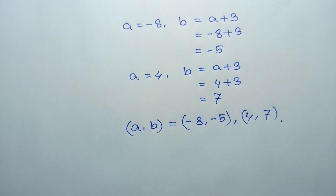So, these are the solutions: when A is equal to negative 8, then B is negative 5, and when A is 4, then B is 7. If you like this video, please subscribe to my channel. Thanks for watching.